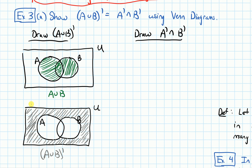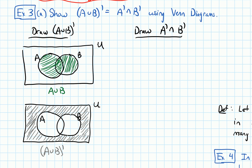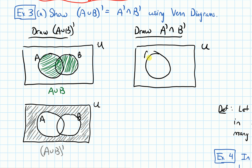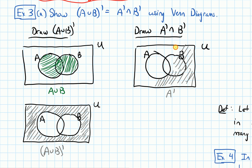For this side, I have to handle it with a little bit more care, because it can quickly get complicated. I'm going to draw a rectangle to represent U and my two circles for A and B, and first draw A complement. A complement means the stuff that's outside of A — not in A, but still within U. So I shade in the stuff that is outside of A.